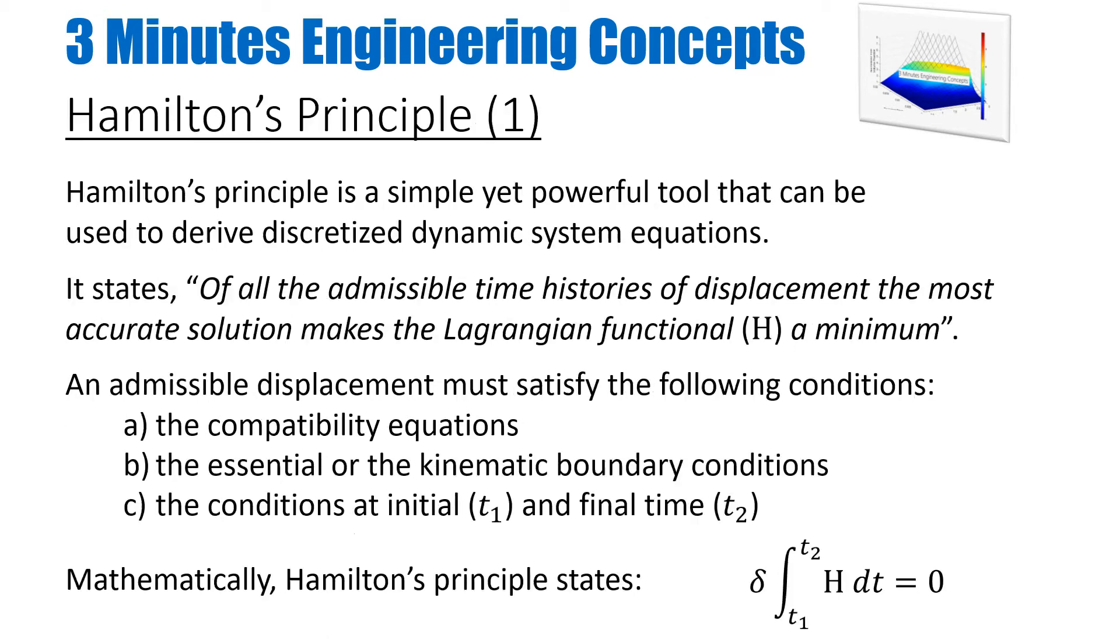Hamilton's principle is a simple yet powerful tool that can convert your strong form to a weak form and derive discretized dynamic system equations. In mathematical terms, it states that of all the admissible time histories of the displacement, the most accurate solution makes the Lagrangian functional a minimum. I will show you how to construct a Lagrangian functional for our case later on, but just assume it's a function and you need to minimize it. This means you need to make it a zero value, and it says that for any small displacement disturbance or value, it should give you an accurate solution based on the minimization.